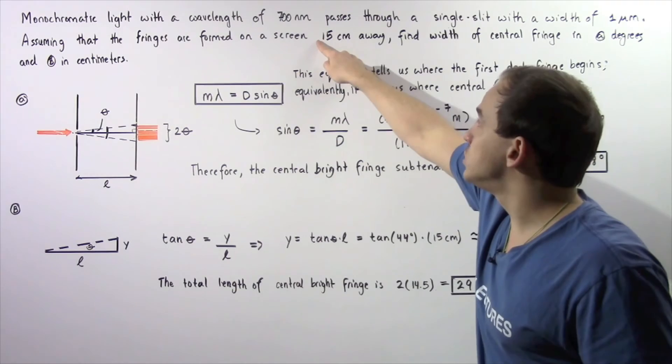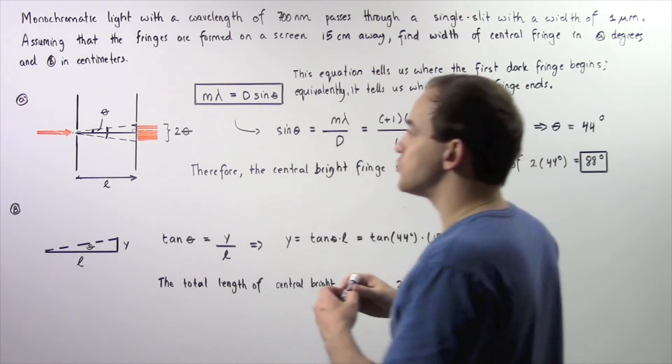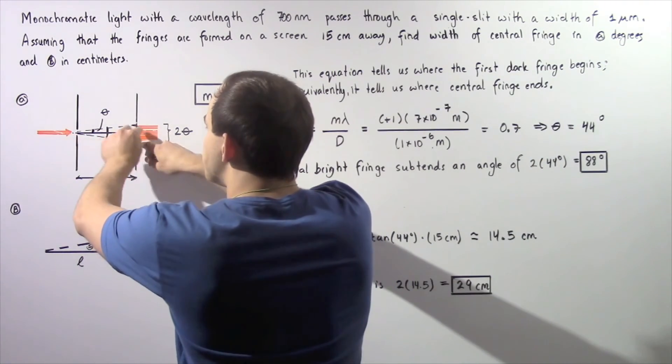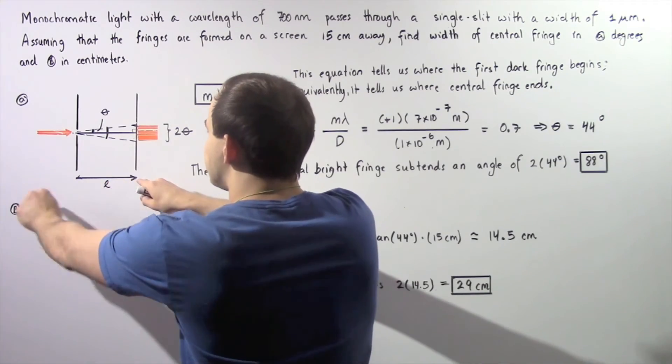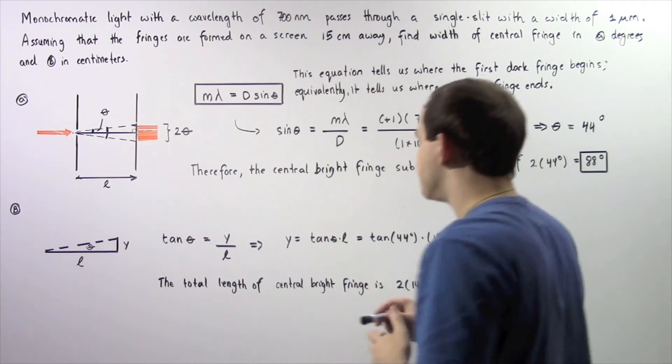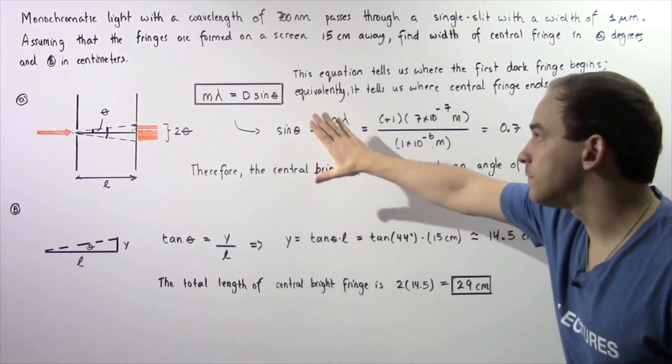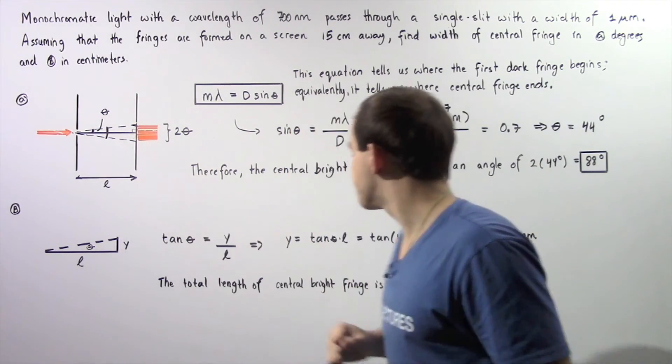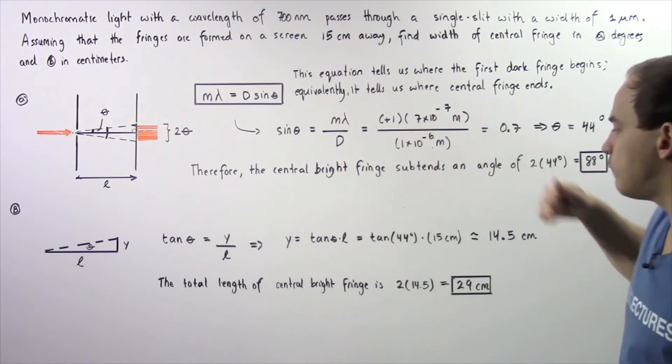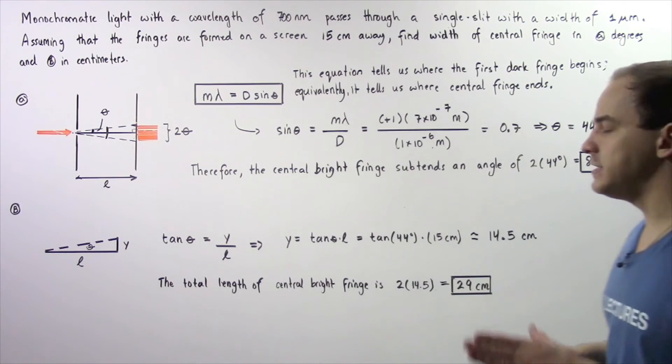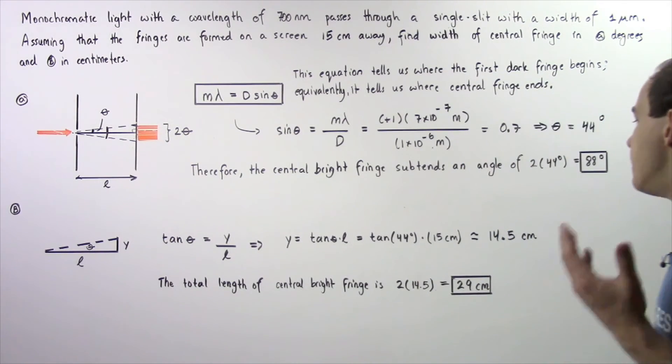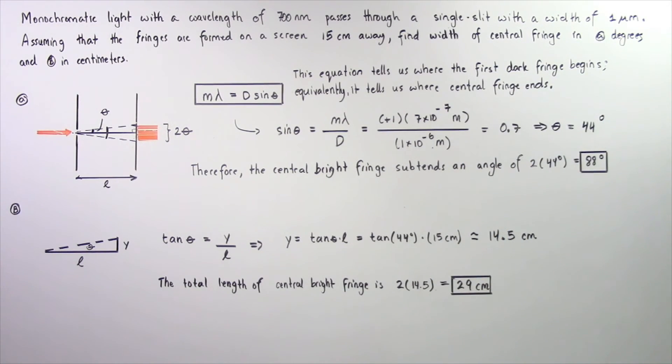Now L is equal to 15 centimeters. It's the length of this base, equivalently it's the distance between the two screens. We know the angle from part A is 44 degrees. So tangent of 44 degrees multiplied by 15 centimeters gives us about 14.5 centimeters.